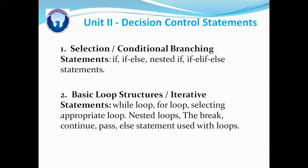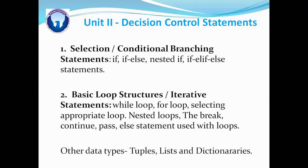Then we are going to see how to select an appropriate loop for a particular task. Then we'll proceed to the nesting of loops, meaning writing a loop inside another. Then we are going to see some standard keywords given by Python to use in loops — these keywords are break, continue, pass, else, etc. At the end of this unit, we are going to see some important data types or data structures provided by Python to store multiple elements, and these data structures are tuples, lists, and dictionaries.